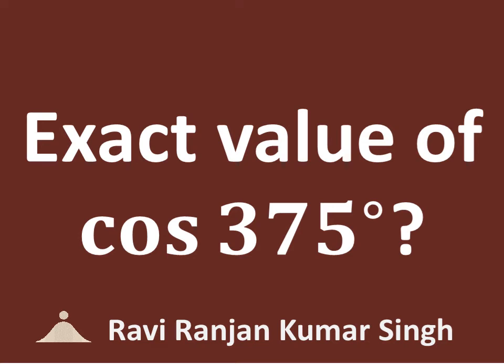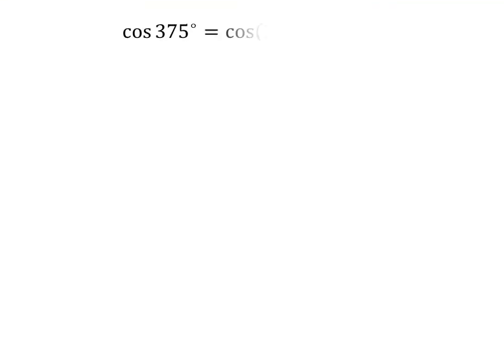In this video, we will learn to find the exact value of cosine of 375 degrees. 375 degrees is equal to 270 degrees plus 105 degrees, so cosine of 375 degrees is equal to cosine of 270 degrees plus 105 degrees.